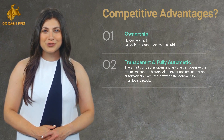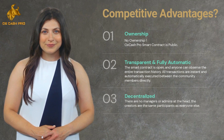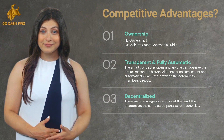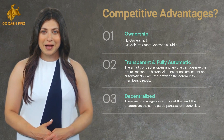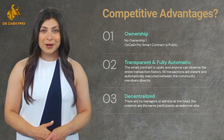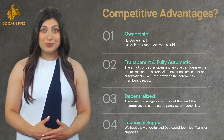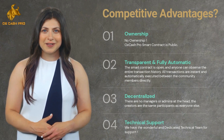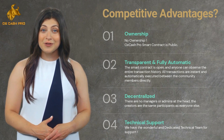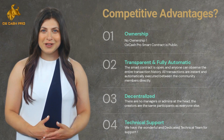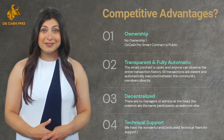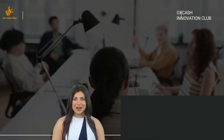Third is decentralization. There are no managers or admins at the head — the creators developed the smart contract and published it on Tron blockchain so that you or anyone can participate on the same platform equally. Fourth is technical support — we have a dedicated technical team. All you have to do is join our official Telegram group and share your issues; our technical team will resolve them as soon as possible.